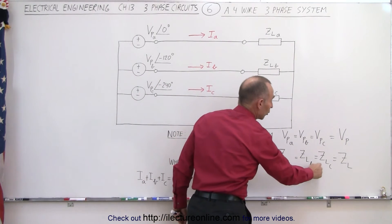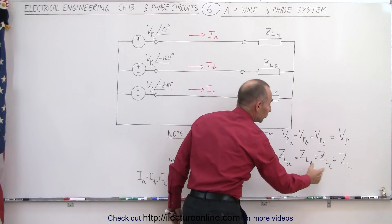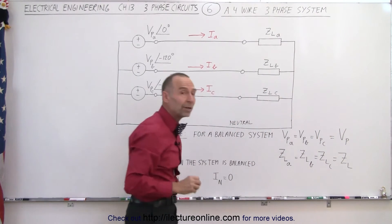In other words, the load for A, the load for B, and the load for C should all be equal to one another. Therefore we just call it the load impedance.